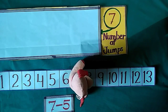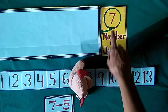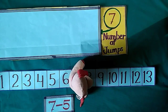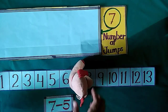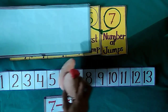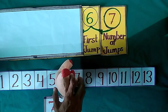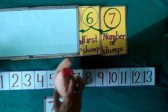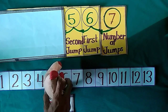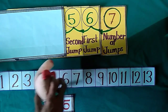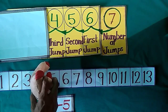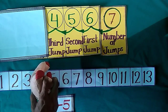Now Jimmy stands at 7 and he wants to do 5 backward jumps. When Jimmy takes his first jump, he reached at 6. With second jump, he reached at 5. With third jump, he reached at 4.